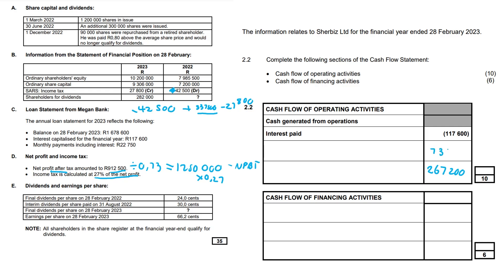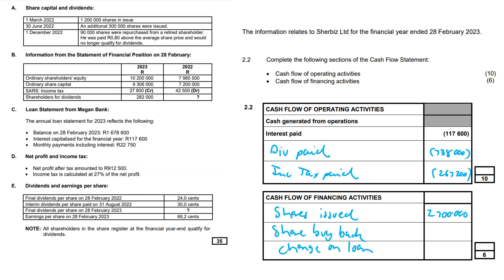The dividends paid amount was 738,000, shown in brackets because it is an outflow. PowerPoint cleared all our workings, so we'll rewrite the values quickly and move on.